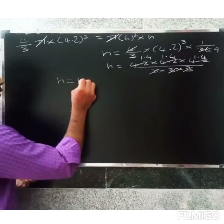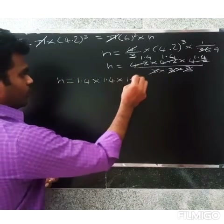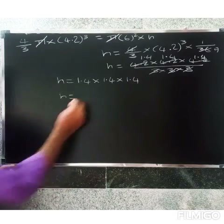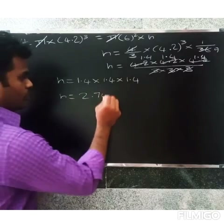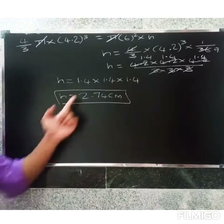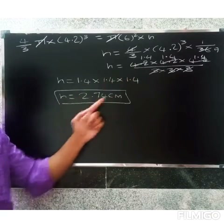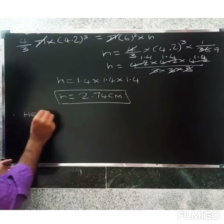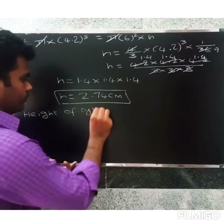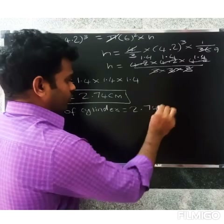After cancellation, h equals 1.4 × 1.4 × 1.4, which is (1.4)³. Calculating: 1.4² equals 1.96, and 1.96 × 1.4 equals 2.744. Therefore, the height of the cylinder equals 2.74 centimeters.